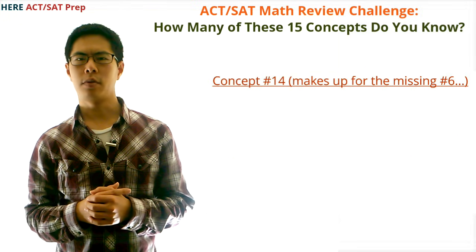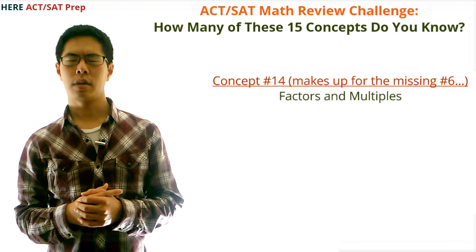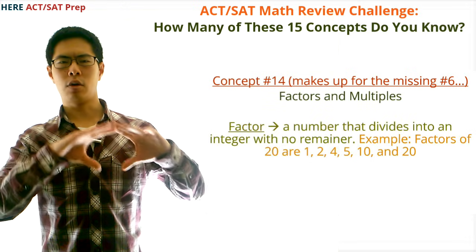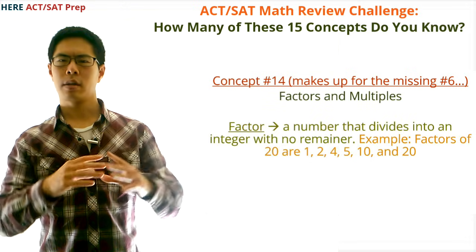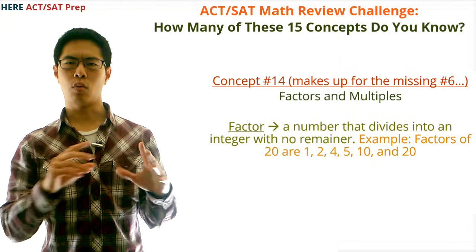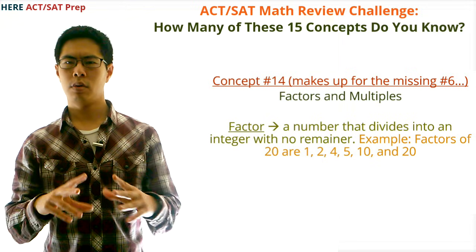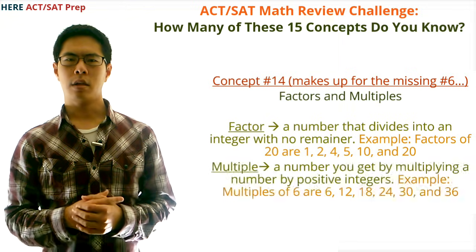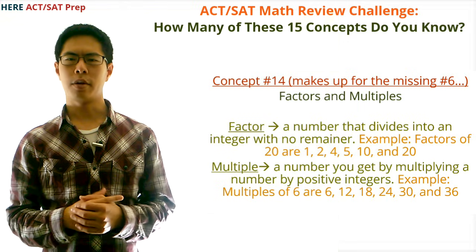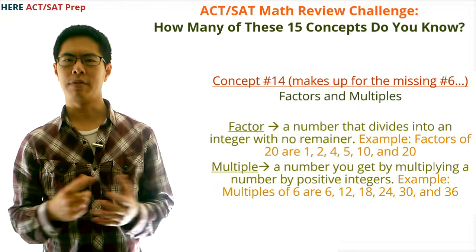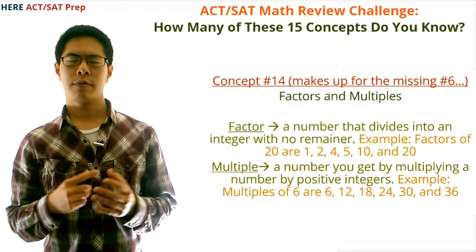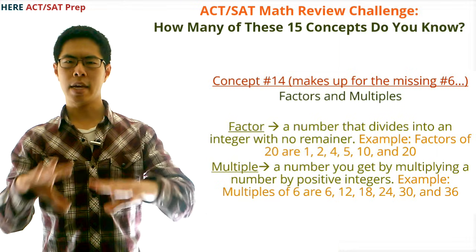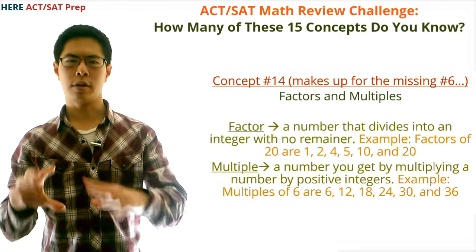Factors and multiples: a factor is a number that divides into an integer with no remainder. For example, the factors of 20 are 1, 2, 4, 5, 10, and 20. A multiple is a number you get by multiplying a number by positive integers. For example, multiples of 6 are 6, 12, 18, 24, 30, and 36.